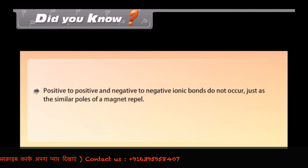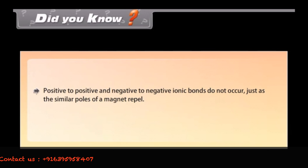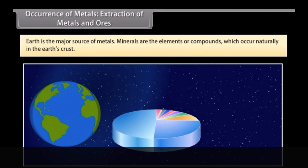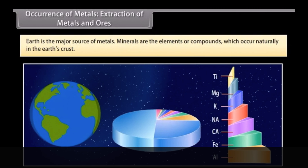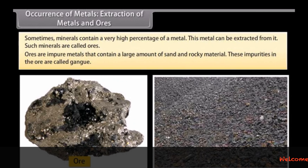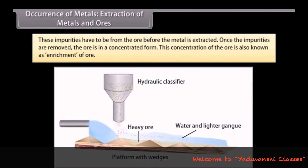Did you know? Positive to positive and negative to negative ionic bonds do not occur, just as similar poles of a magnet repel. Occurrence of metals — extraction of metals and ores: earth is the major source of metals; however, seawater also contains some soluble salts. Minerals are elements or compounds which occur naturally in the earth's crust. Sometimes minerals contain a very high percentage of a metal that can be extracted — such minerals are called ores. Ores are impure metals that contain a large amount of sand and rocky material; these impurities are called gangue. These impurities must be removed before the metal is extracted. Once removed, the ore is in a concentrated form, also known as enrichment of ore.